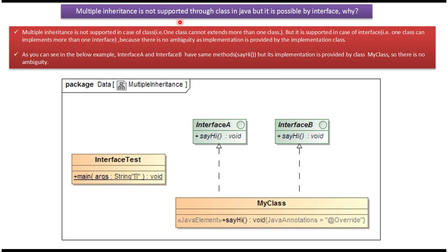Hi, in this video tutorial I will cover multiple inheritance. Multiple inheritance is not supported in case of class, meaning one class cannot extend more than one class. But multiple inheritance is supported in case of interface, meaning one class can implement more than one interface, because there is no ambiguity as implementation is provided by the implementation class.